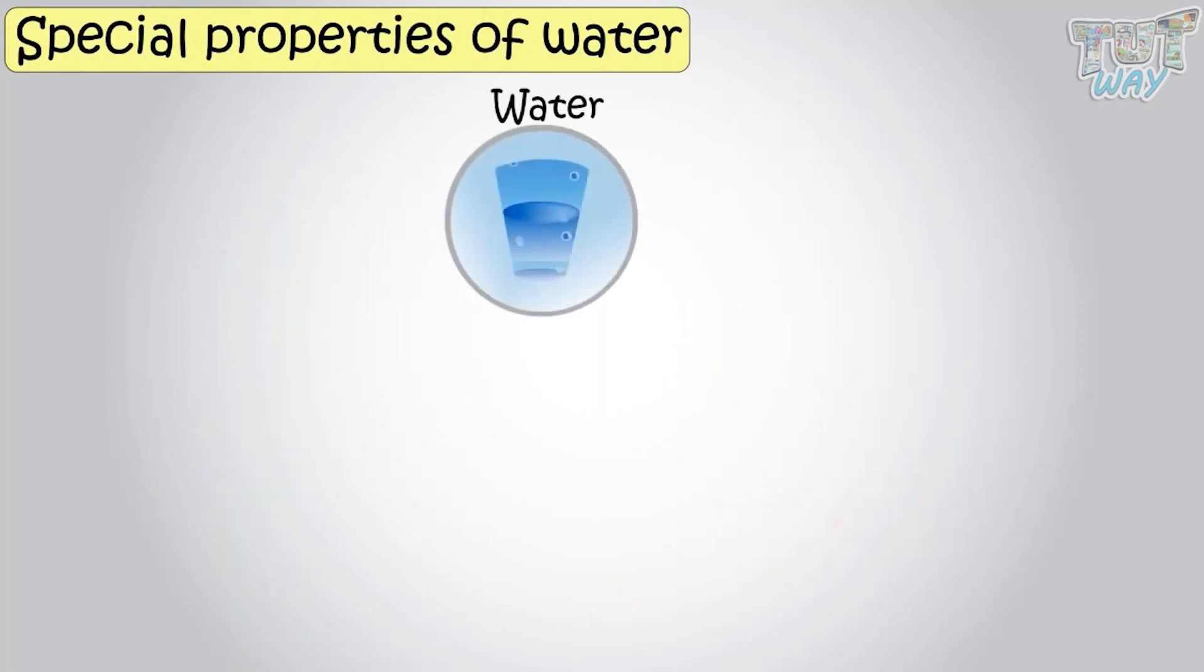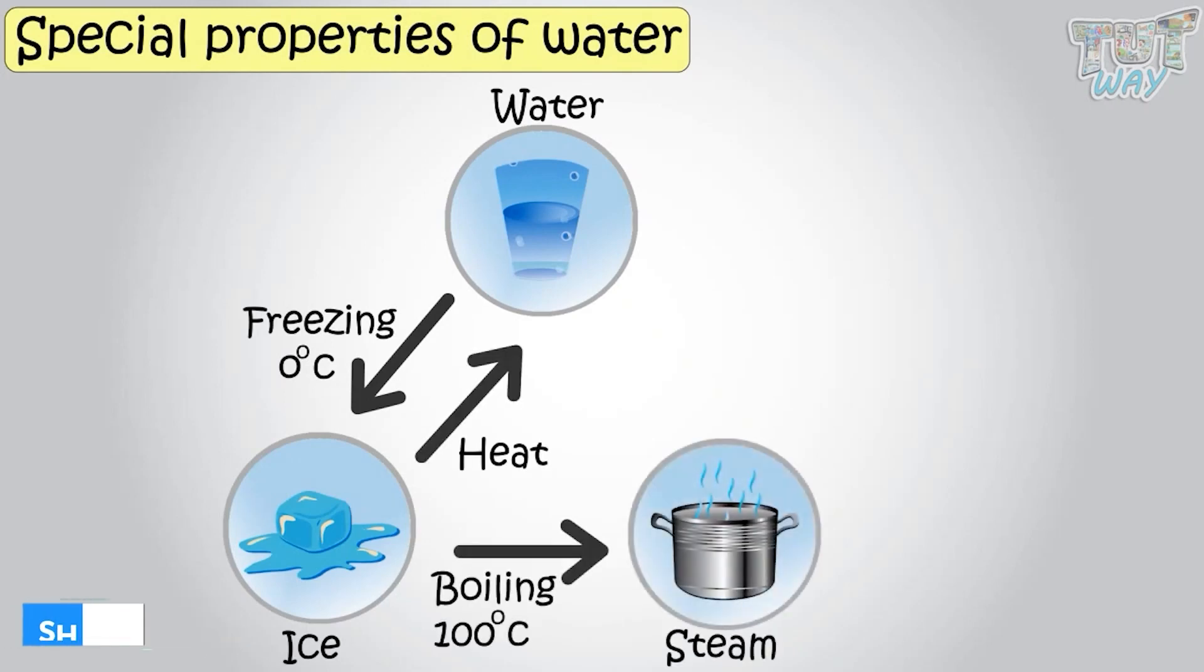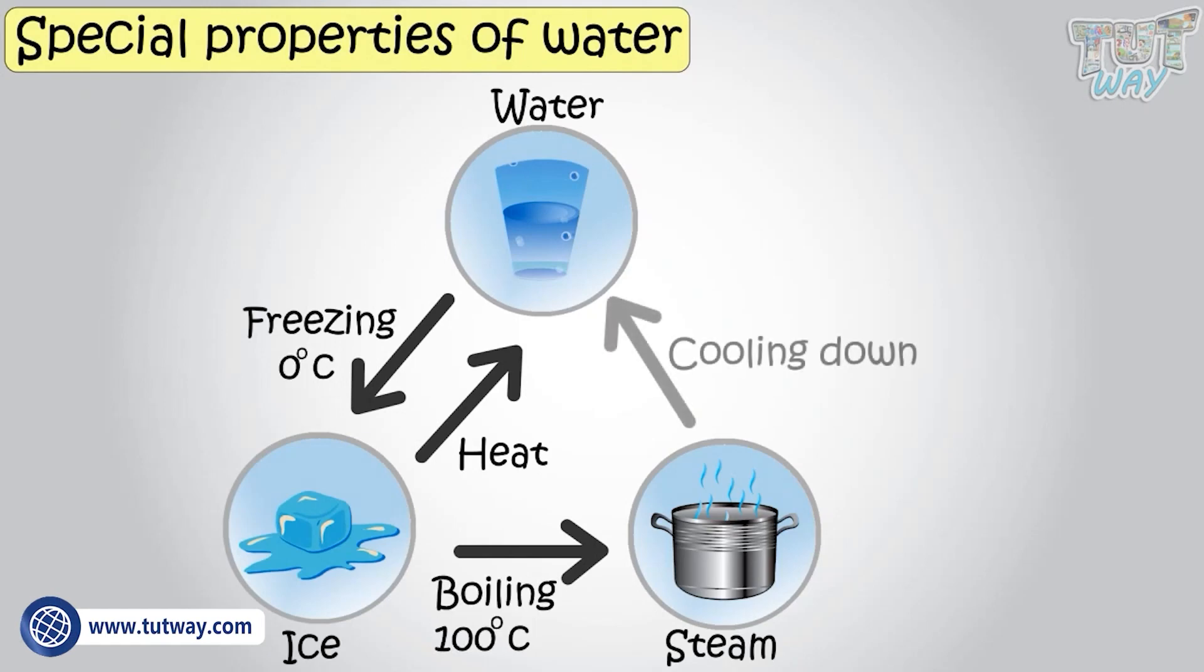Water changes to a solid form when we keep it in a freezer. Water changes to liquid form when we heat it. And if you further heat the water or you boil it, it starts changing into gas or it starts evaporating. That is the steam you see above the boiling water, is the gaseous form of water.